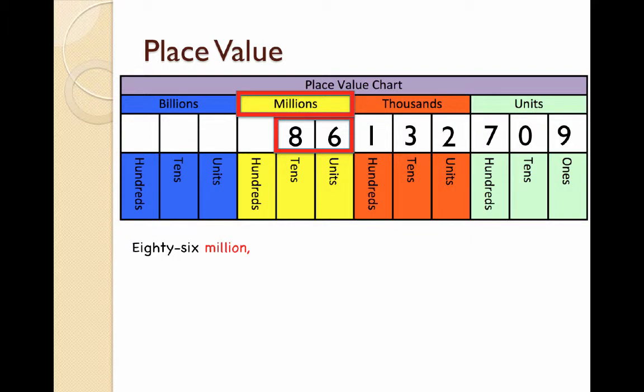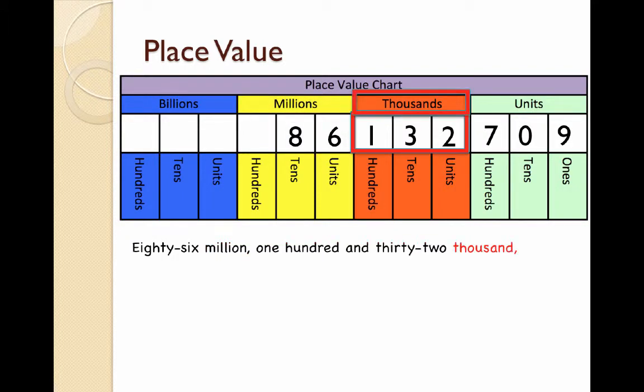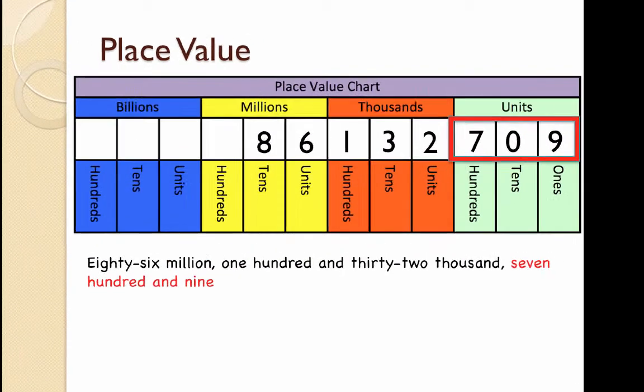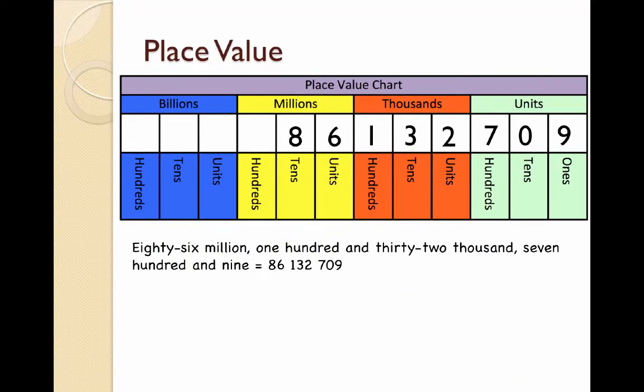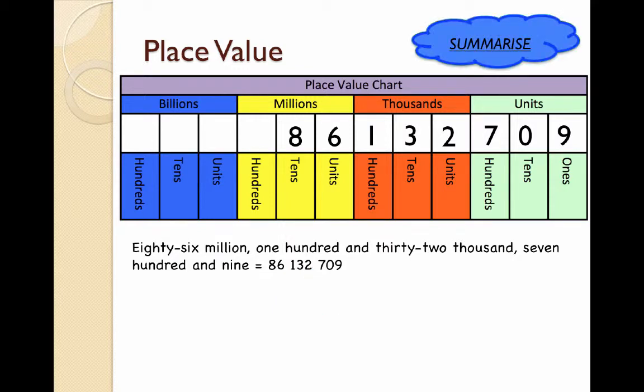I write 86,132,709. Notice how I don't say units at the end of my number. To write this as a whole number, I would write 86,132,709. Note the spaces in between the periods. Take some time to pause and summarize by writing out the place value chart as well as the example that I've given you.